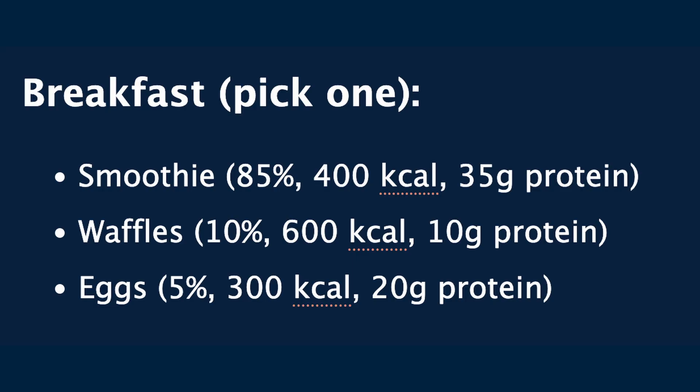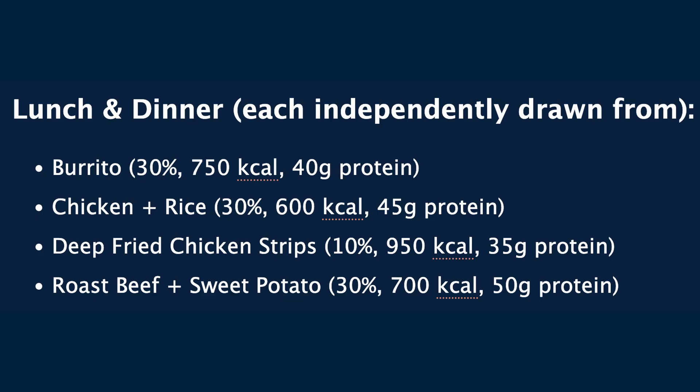Let's say you eat three meals a day. For breakfast you choose one of three meals: a smoothie, waffles, or eggs. You estimate that 85% of the time you choose smoothies, 10% of the time waffles, and 5% of the time eggs. For lunch and dinner you always eat the same three or four meals — either a burrito, chicken and rice, deep-fried chicken strips, or roast beef and sweet potatoes. You choose with probabilities: 30% burrito, 30% chicken and rice, 10% chicken strips, and 30% roast beef and sweet potato.